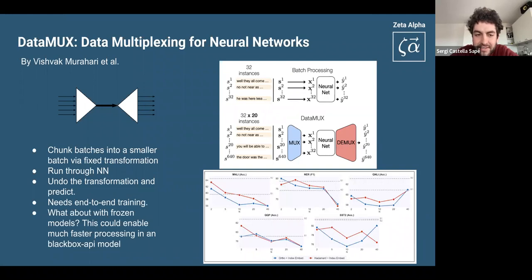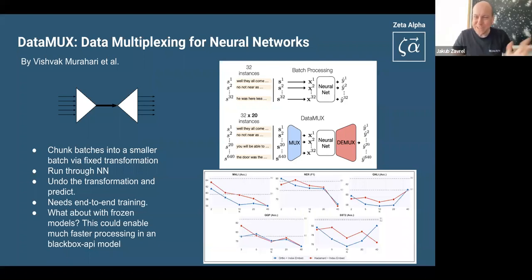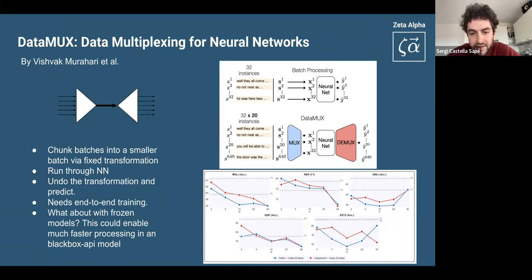The second paper that I wanted to talk about is this data mux data multiplexing. This is a very simple idea. I would say that the results are also very simple. All good ideas are simple, right? So this is multiplexing is something that is used in signal processing. It's a very simple idea, which is in order to make to utilize a channel to its maximum potential, you combine a lot of signals together to communicate them through this channel, and then you kind of untangle them at the end of the channel.